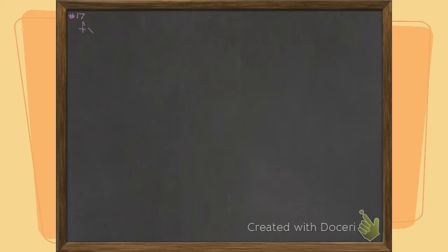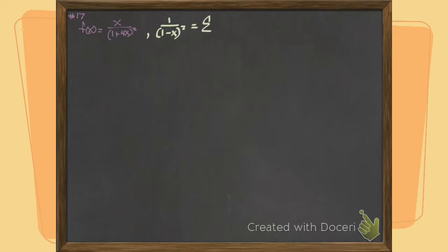Here we go. What are we trying to do? We're trying to make a power series — we're making a power series for this guy. We just moments ago made a new power series for this guy, and we did it with differentiation.